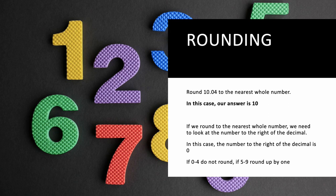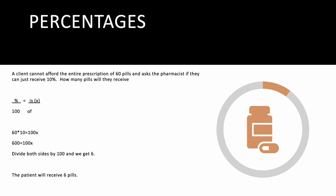For rounding: to round 10.04 to the nearest whole number, look to the right of the decimal. Zero to four means do not round up, so the answer is 10. If the digit to the right of the decimal were five through nine — for example 10.64 — you round up by one, giving you 11.